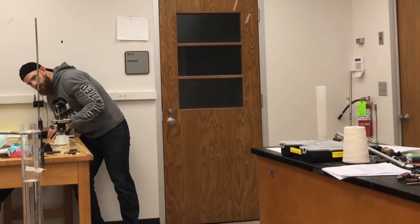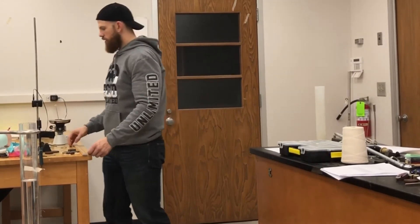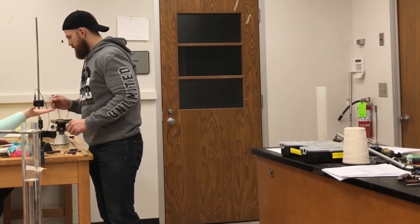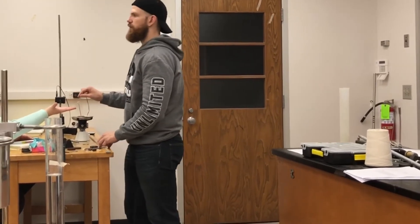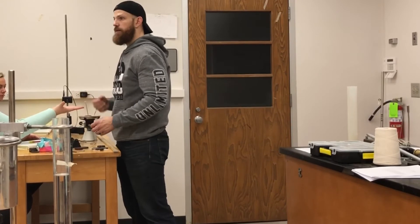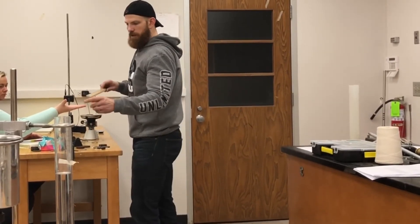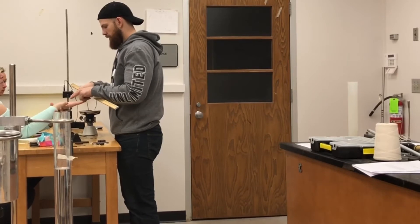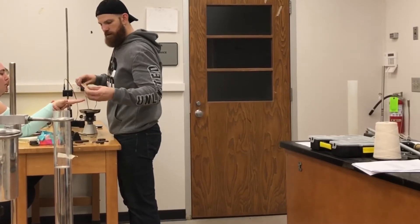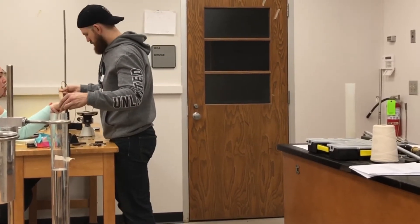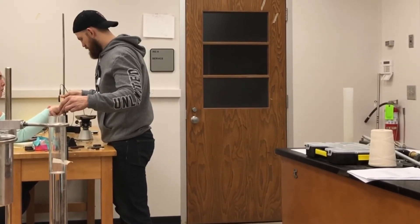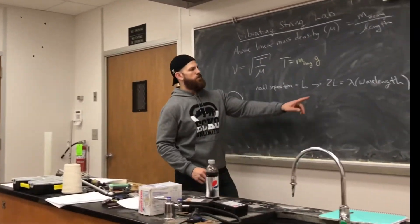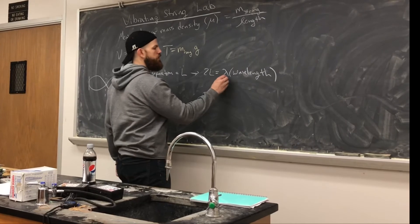Once you get the pattern, have one student put their hand underneath the string — don't touch it — just so you can see where the actual string is. Since it's vibrating, it's hard to measure, so gauge where the center node is. The measurement here is about 56 or 57. Take the nodal separation measurement, multiply it by 2, and you get the wavelength lambda.